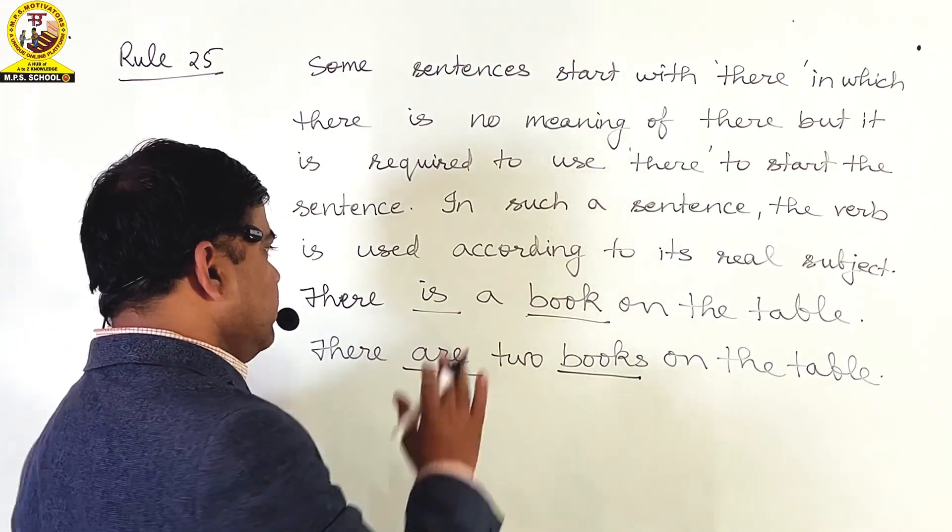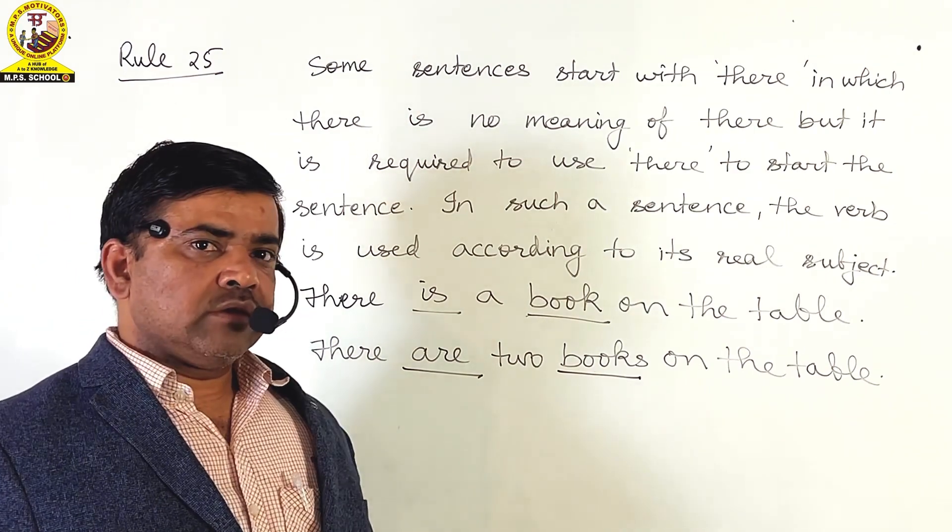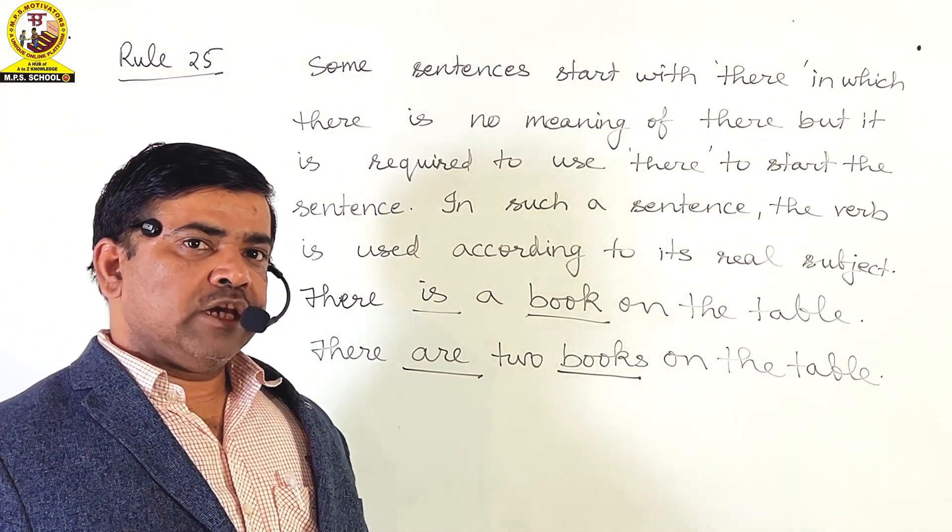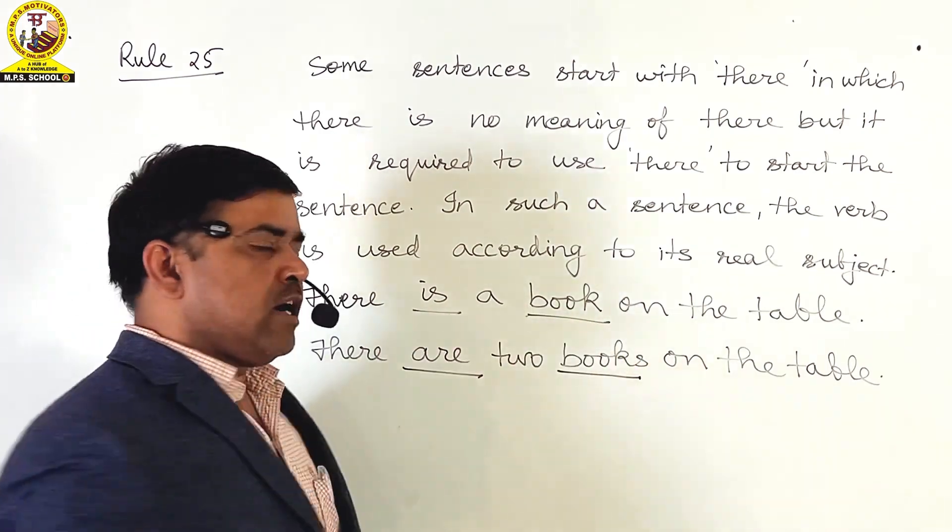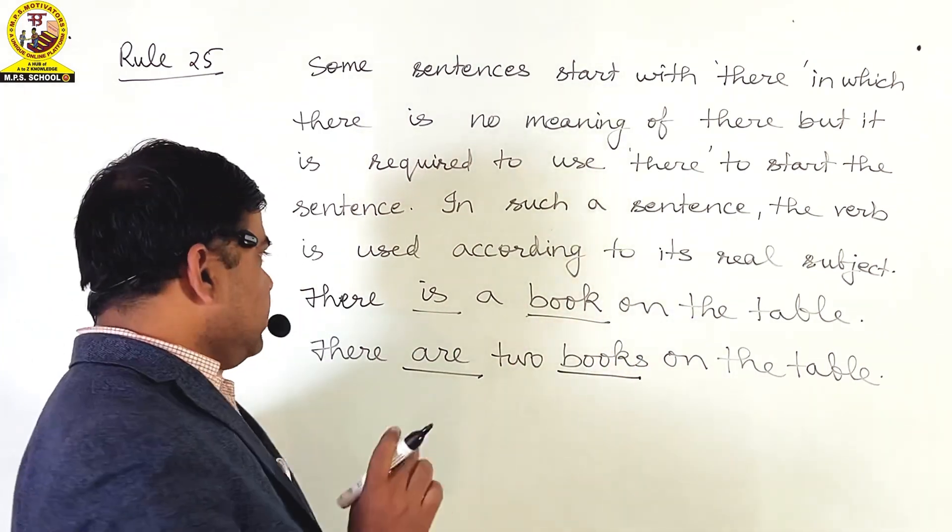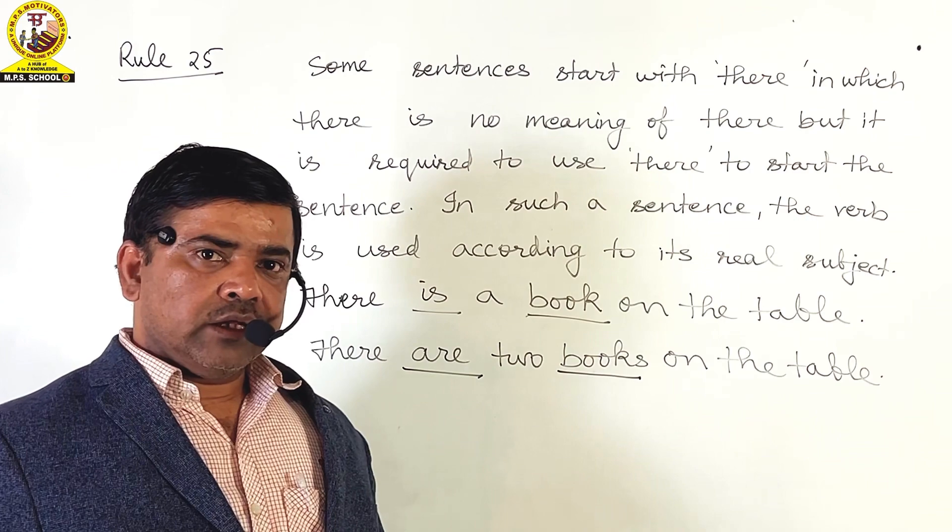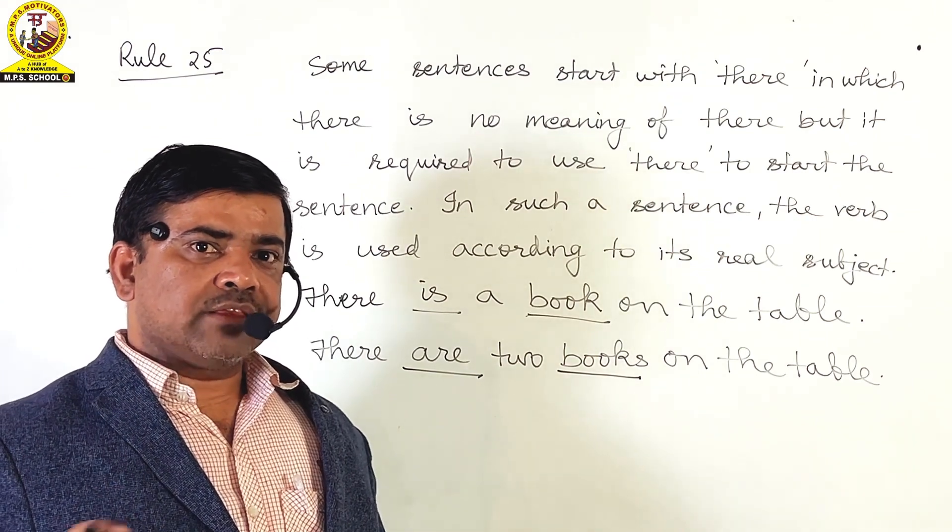And the meaning of the sentence is 'Mej par do kitabe hain.' The meaning of the first example, there is a book on the table, is 'Mej par ek kitab hain.'